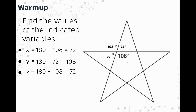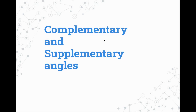Now look at this pattern. The angles that are across from each other — in the previous warm-up we suspected those could be congruent — and they indeed are congruent. These two are across from each other and they're congruent. The angles right next to each other on the same line add up to 180. And that leads us into today's lesson.